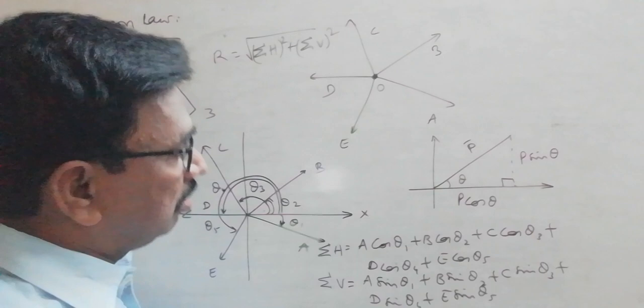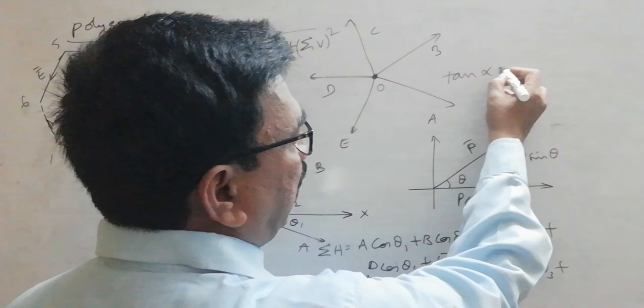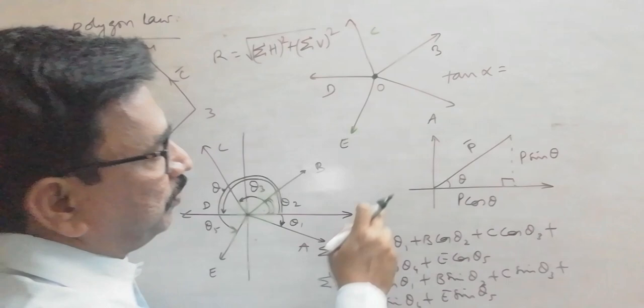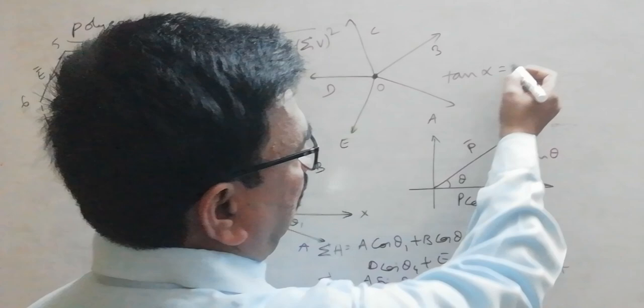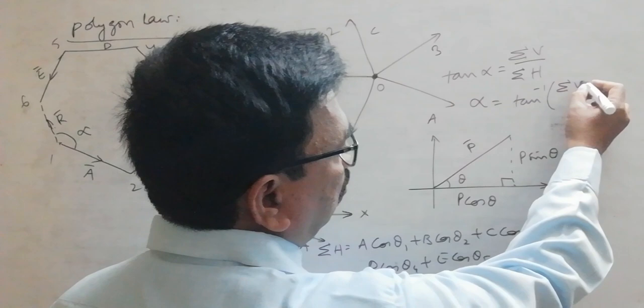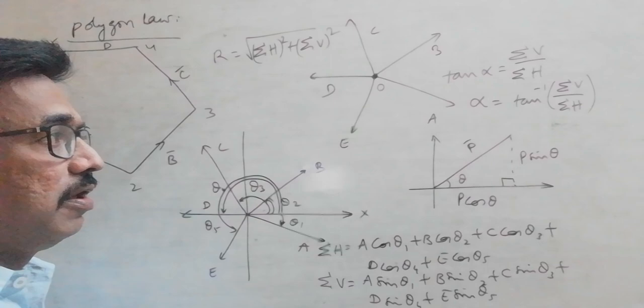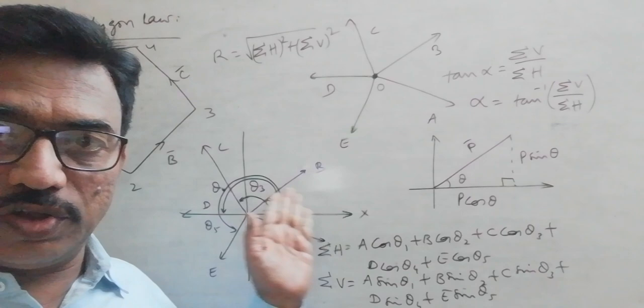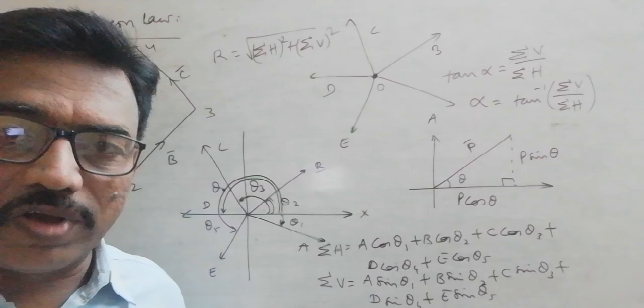Now these two — sigma H and sigma V — are the two mutually perpendicular components, and you can find out the resultant using the relation R equal to the square root of sigma H squared plus sigma V squared. So using this relation we can find out the magnitude of the resultant. The angle it makes with respect to the positive X-axis is given by tan alpha equal to sigma V divided by sigma H, so alpha equals tan inverse of sigma V by sigma H. This is how we can use polygon law and the resolution method — resolving each vector into its horizontal and vertical components — to find out the resultant magnitude and direction.